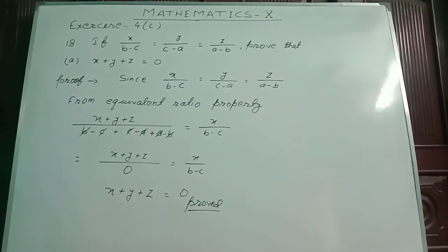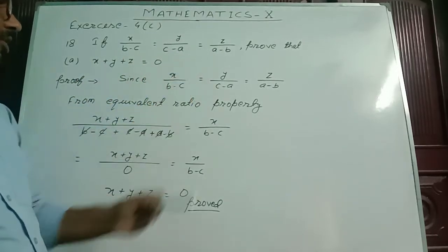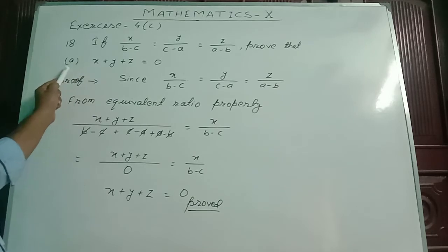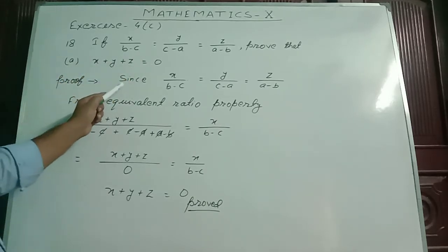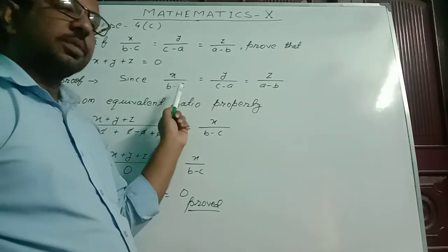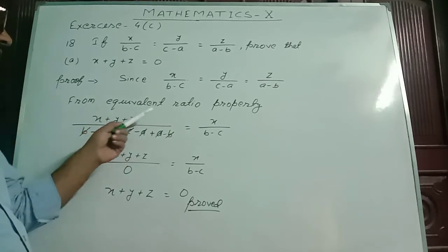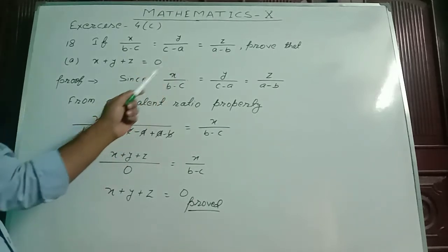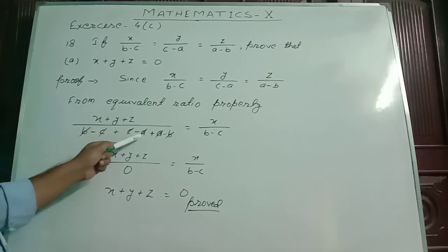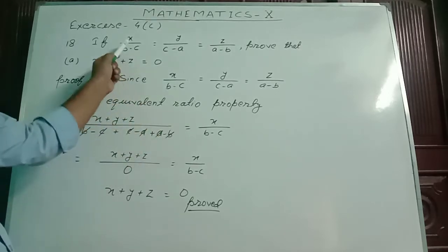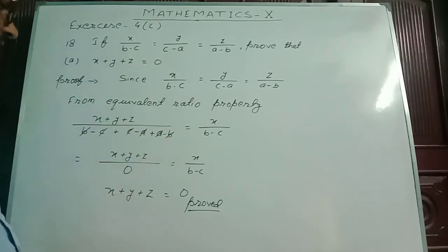In question number 18, if x by b minus c equals y by c minus a equals z by a minus b, prove that question number a: x plus y plus z equals 0. Here, I have written the given information. From equivalent ratio property, I have added the numerators and denominators. I got x plus y plus z by b minus c plus c minus a plus a minus b, which will also be equal to any ratio — either this or this. So I have taken x by b minus c.